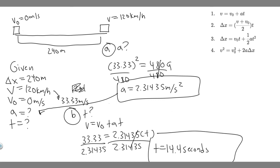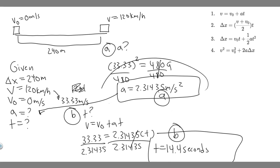Keep in mind these values might be slightly off due to rounding, so use a more exact value if your teacher requires it. So the answer to Part A is approximately 2.31 meters per second squared, and the answer to Part B is approximately 14.4 seconds. Hopefully you found this useful.